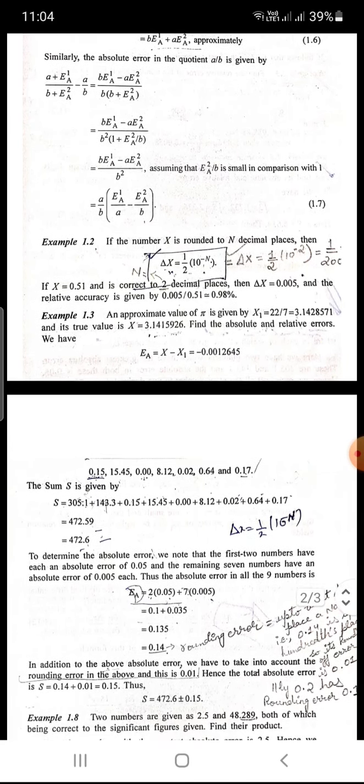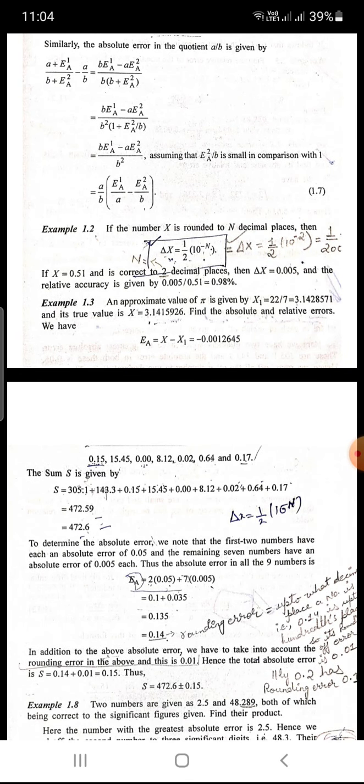These can be easily understood by the following examples. Let us take a few examples. Suppose, for example, if the number x is rounded to n decimal places, then delta x is equal to half times 10 raised to power minus n.